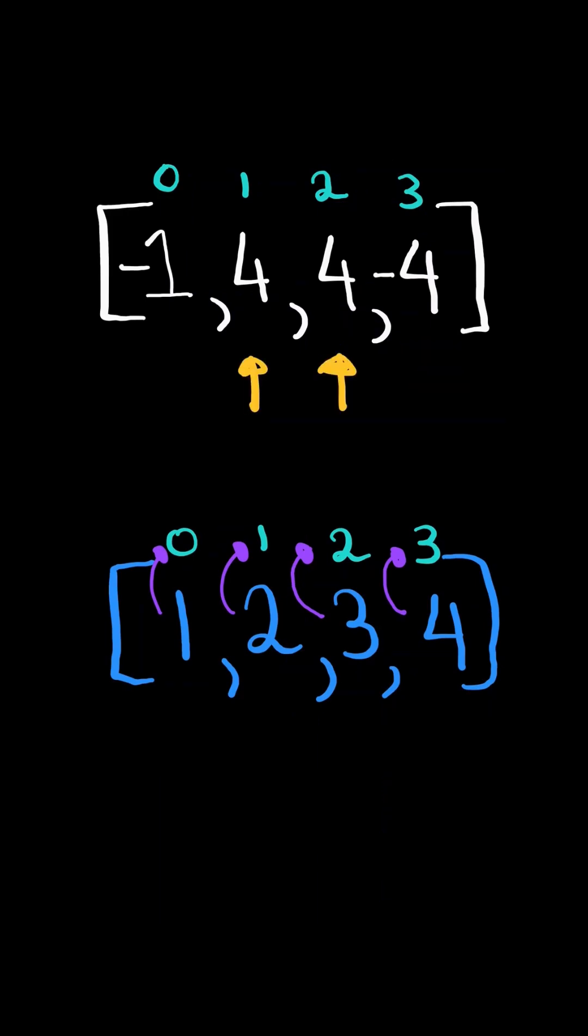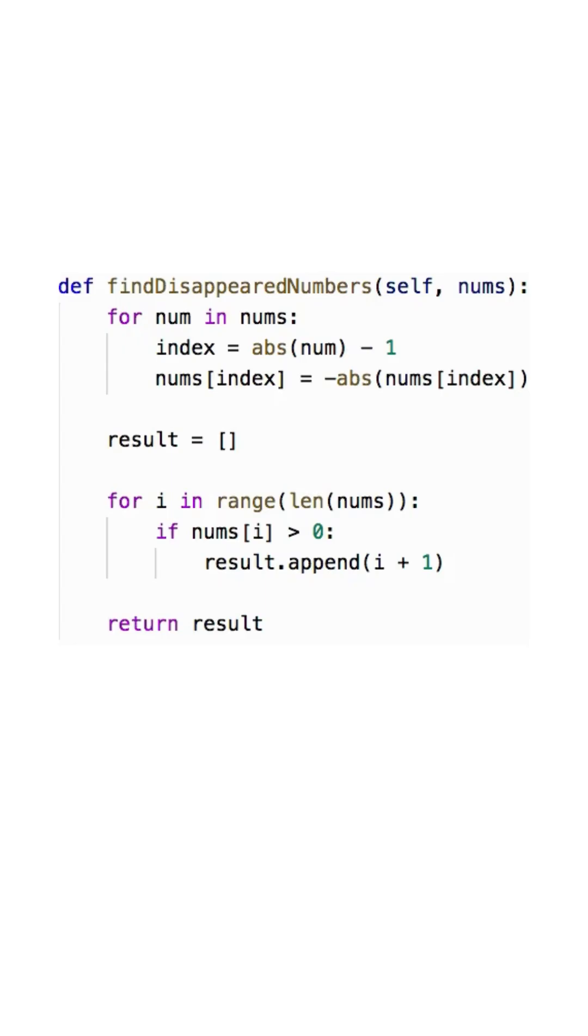At the end, the values that are positive, we add 1 to their index, and those will be the missing numbers. Here is the code to do so.